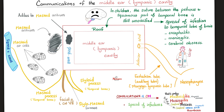Just behind it, there is the sigmoid venous sinus. So the infection can spread here as well, leading to sigmoid sinus thrombosis. Remember that this is the styloid process and this is the mastoid process, both parts of the temporal bone. Between them, there is the stylomastoid foramen, through which cranial nerve 7, the facial nerve, exits. So otitis media can spread and cause Bell's palsy or facial nerve palsy — ipsilateral paralysis of one half of the face.